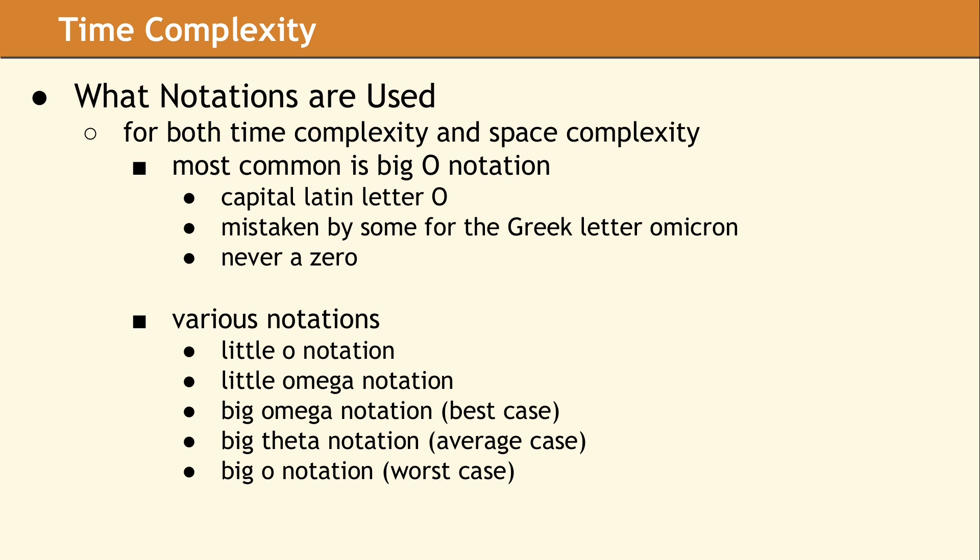There are several different notations which can be used to represent time complexity. The most common notation starts with a capital letter O and is called big O notation, so it is not confused with the number zero, which is not actually a notation.